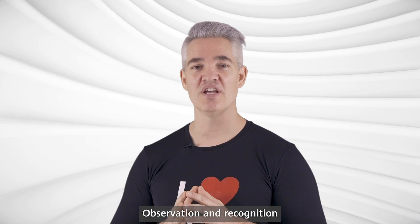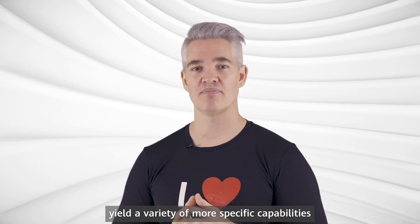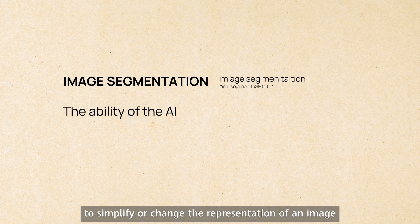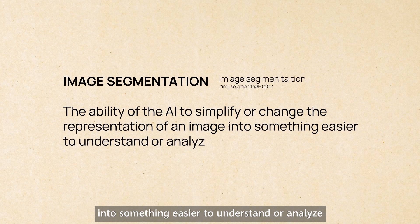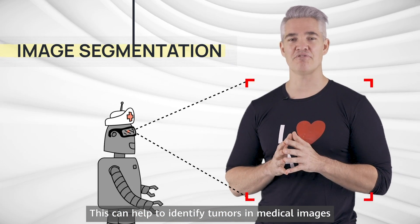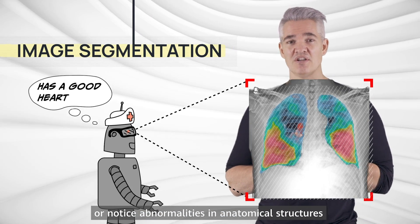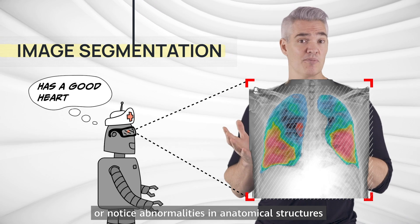Observation and recognition yield a variety of more specific capabilities. For instance, image segmentation is the ability of the AI to simplify or change the representation of an image into something easier to understand or analyze. This can help to identify tumors in medical images or notice abnormalities in anatomical structures.